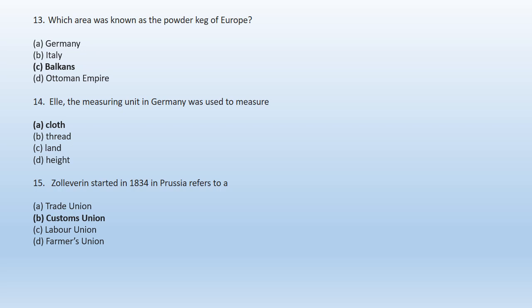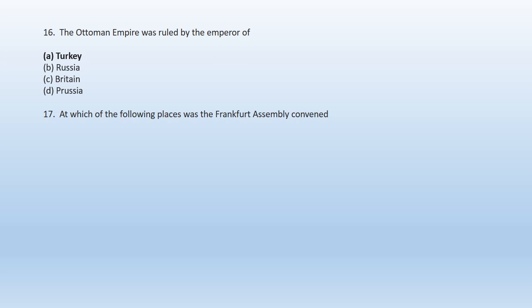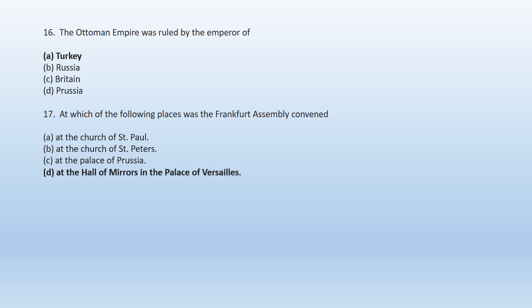Question 16: The Ottoman Empire was ruled by the emperor of: A. Turkey, B. Russia, C. Britain, D. Prussia. The right option is A — the Ottoman Empire was ruled by the emperor of Turkey. Question 17: At which one of the following places was the Frankfurt Assembly convened? A. At the Church of St. Paul's, B. At the Church of St. Peter's, C. At the Palace of Prussia, D. At the Hall of Mirrors in the Palace of Versailles. The right option is option D — the Frankfurt Assembly was convened at the Hall of Mirrors in the Palace of Versailles.